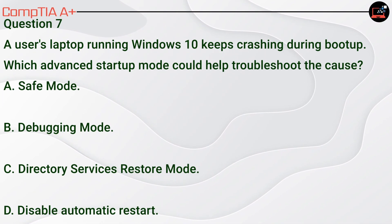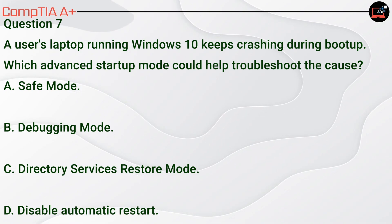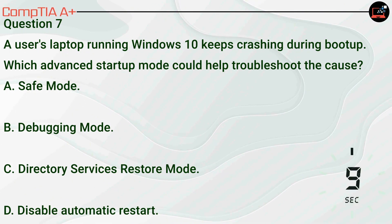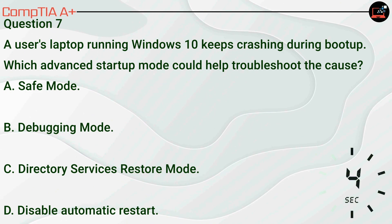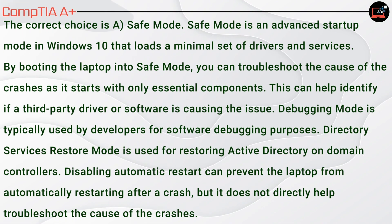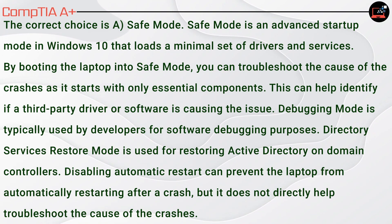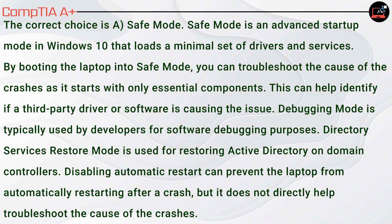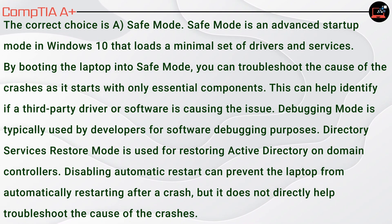Question 7. A user's laptop running Windows 10 keeps crashing during boot up. Which advanced startup mode could help troubleshoot the cause? A, Safe Mode. B, Debugging Mode. C, Directory Services Restore Mode. D, Disable Automatic Restart. The correct choice is A, Safe Mode. Safe mode loads a minimal set of drivers and services, allowing you to troubleshoot the cause of crashes and identify if a third-party driver or software is the issue. Debugging Mode is typically used by developers. Directory Services Restore Mode is used for restoring Active Directory on domain controllers. Disabling Automatic Restart can prevent automatic restarts after a crash but does not directly help troubleshoot the cause.